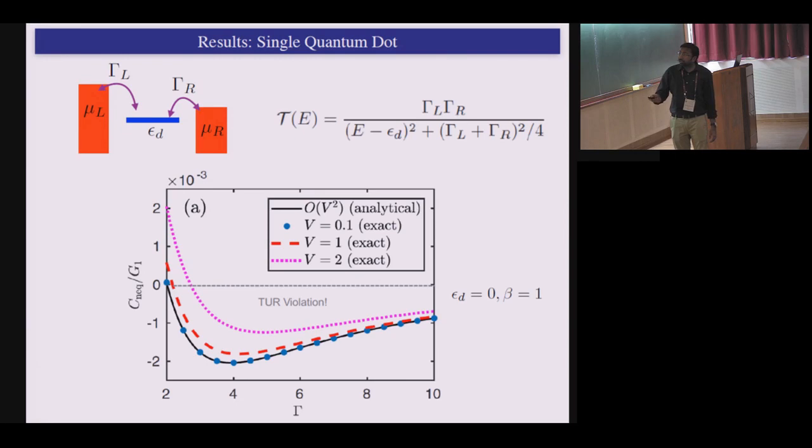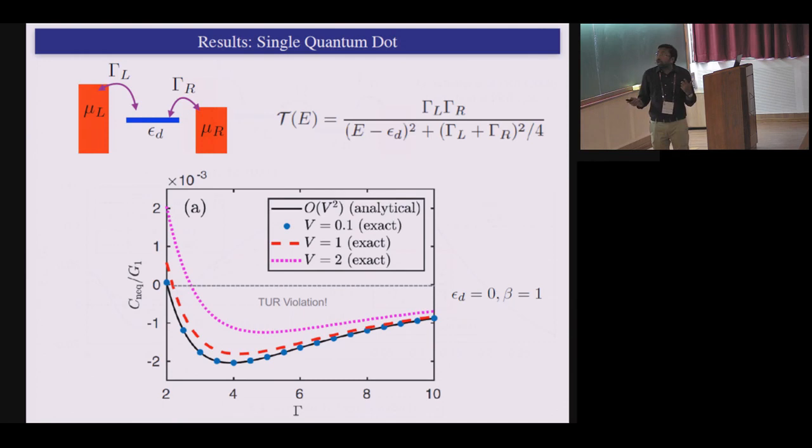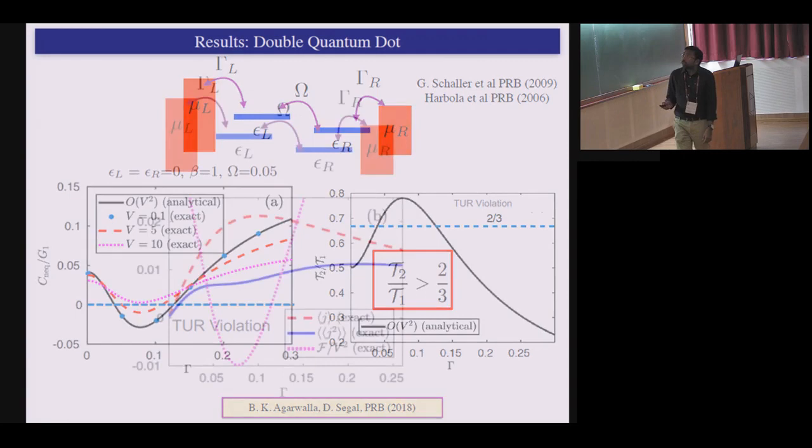And what we saw is that if you, let's say, have a single dot coupled to two baths, you start to see violation in the strong system-bath coupling limit. Not at the weak coupling limit. The reason being when you have weak coupling, you have a Markovian process going on. You can argue from the rate equation or quantum master equation. The moment you go to the strong coupling limit, you have higher order tunneling processes, and you start to see violation. On the other hand, if you have double quantum dot, you see an opposite regime, where at weak system-bath coupling, you start to see population couples to coherence, and that gives rise to non-Markovian dynamics. And that precisely matches with our prediction of the ratio of the transmission greater than two-thirds.